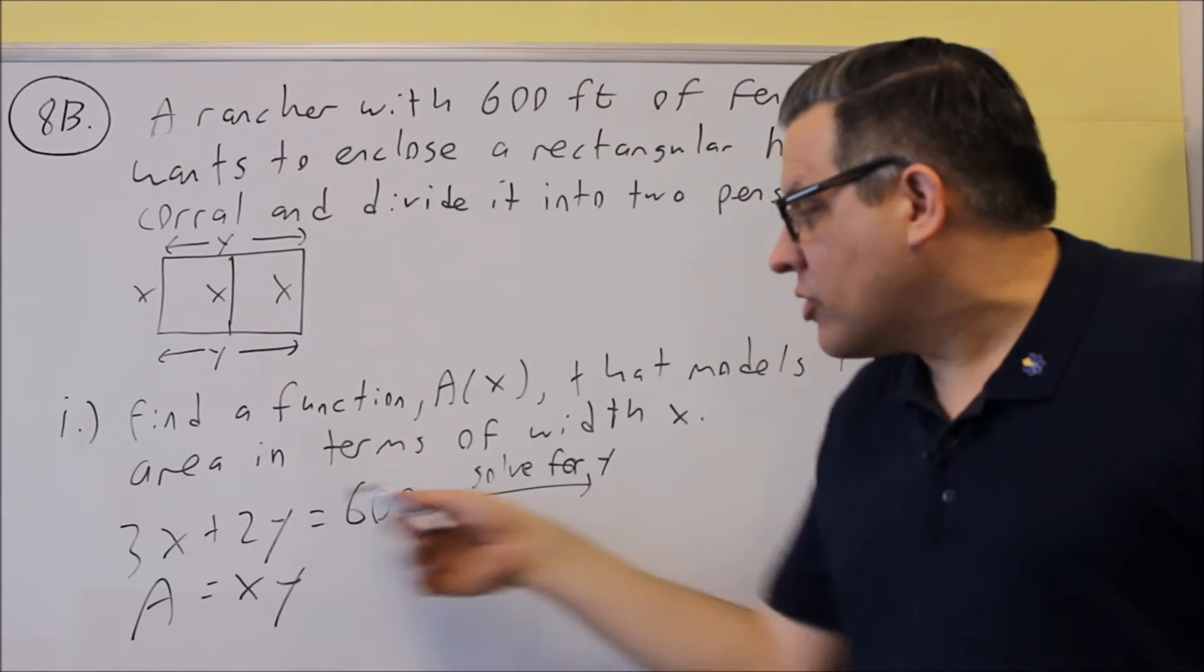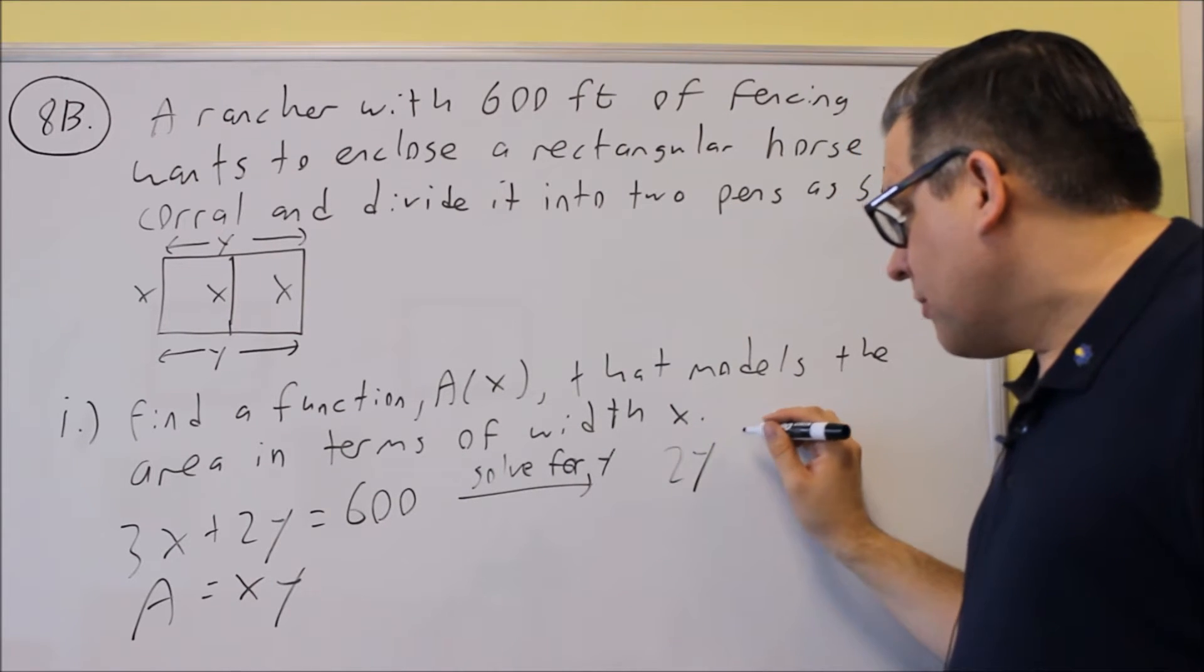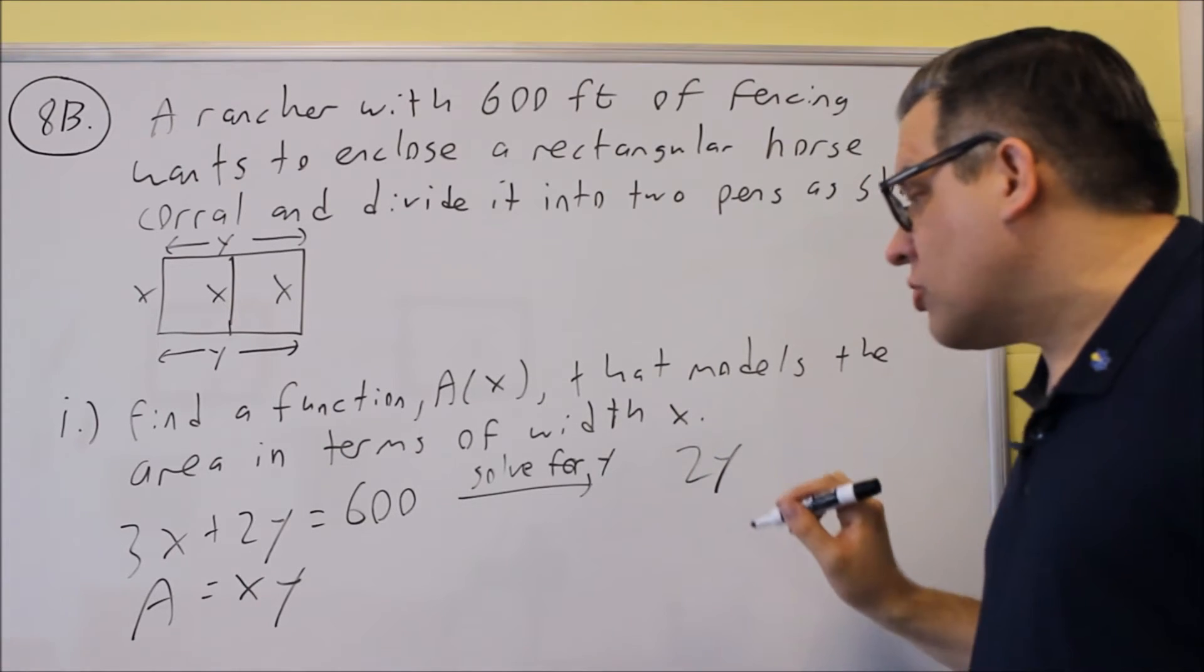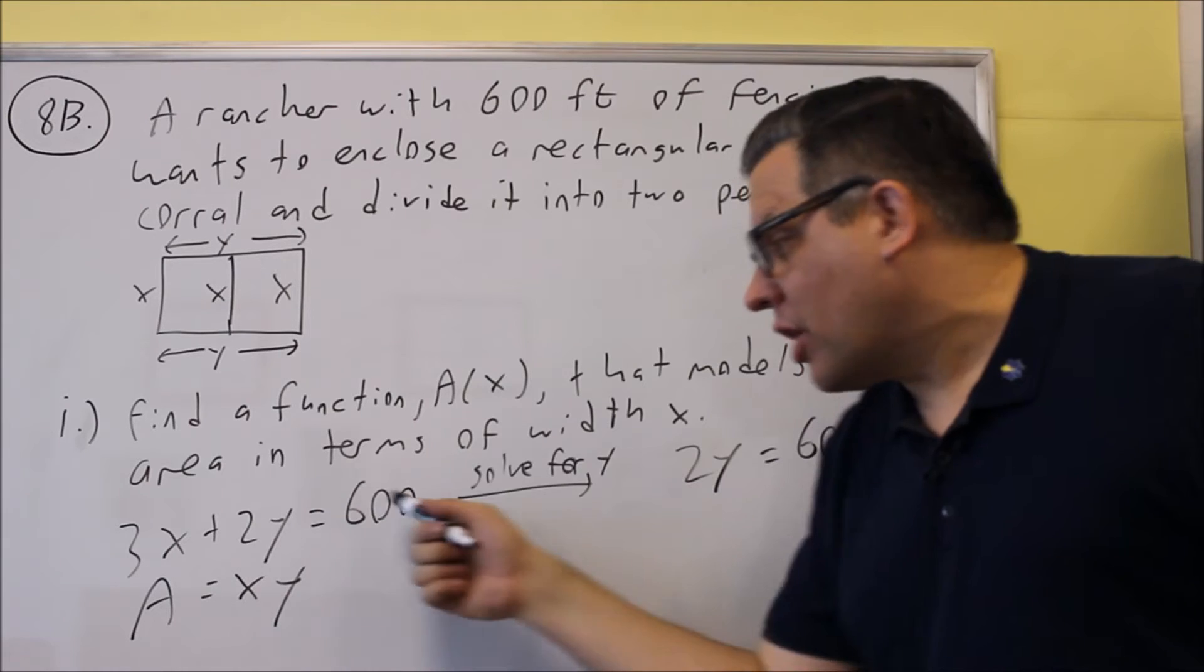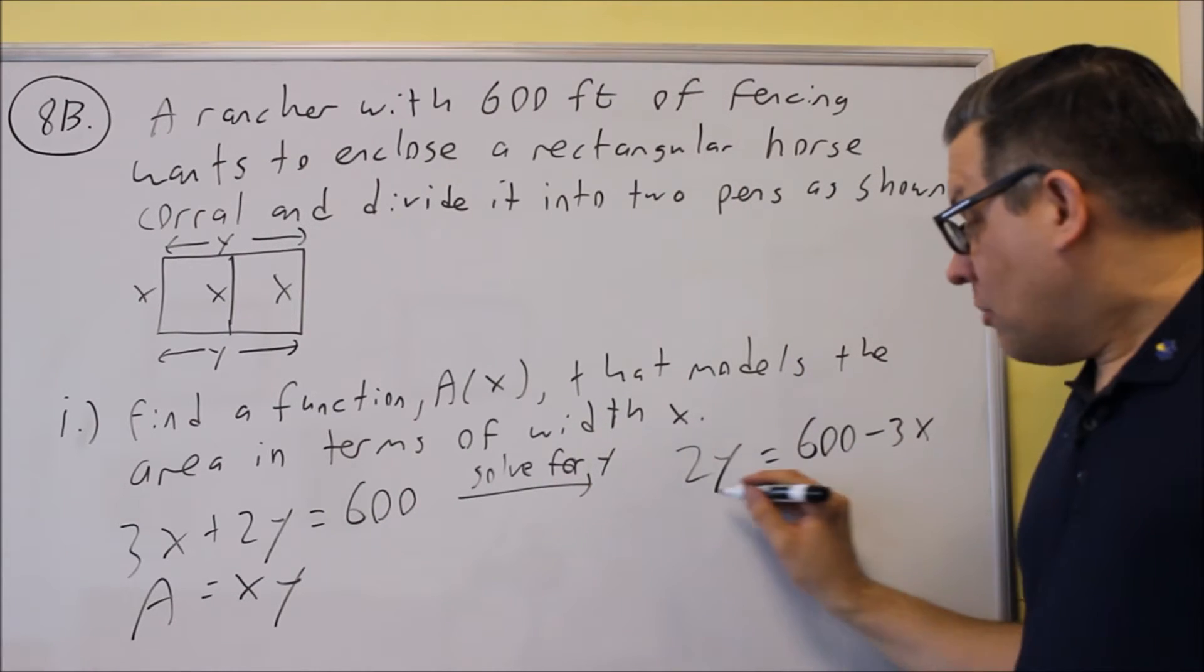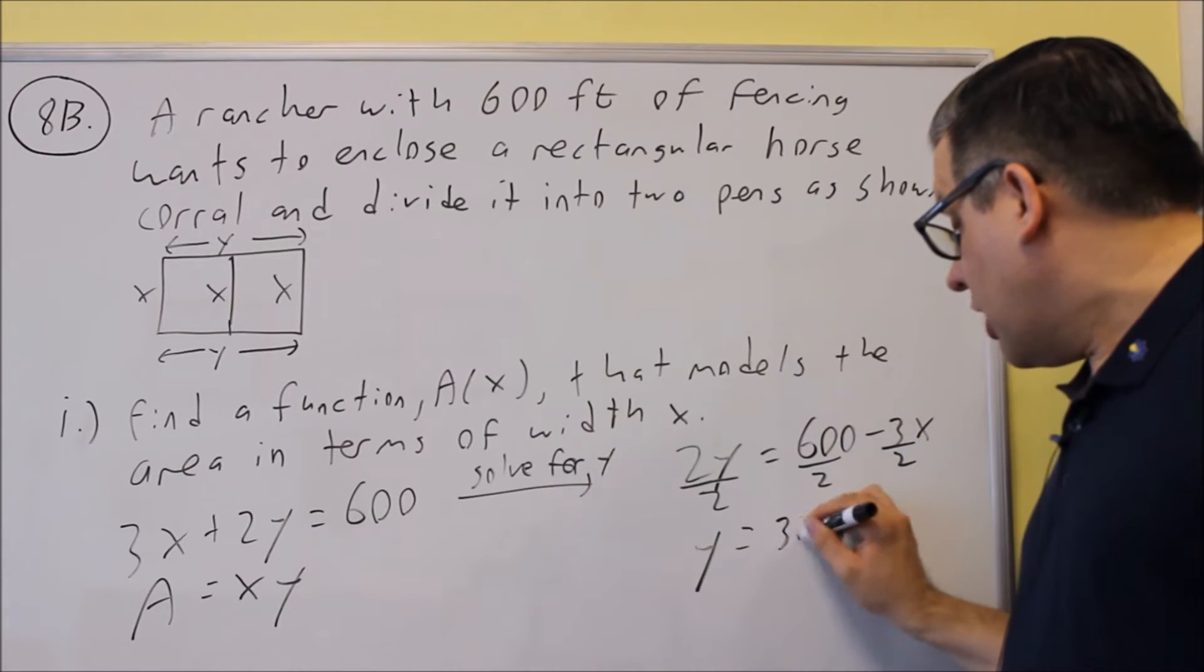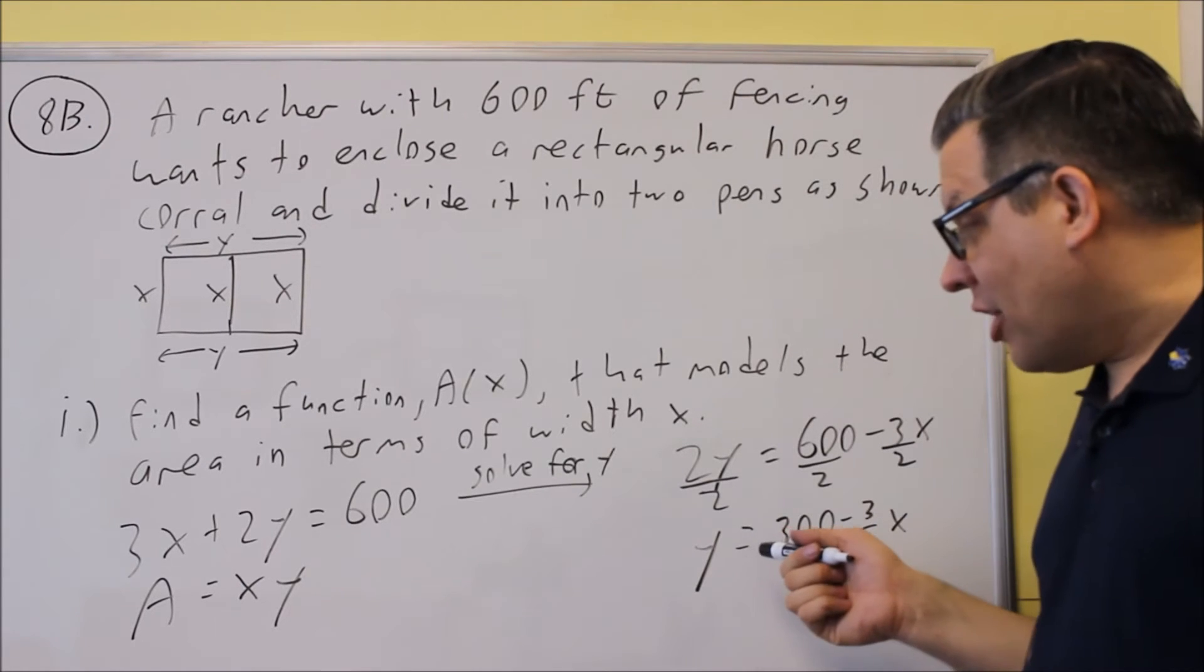So if I solve for y, that means I would subtract 3x from both sides and I would get 2y is going to equal 600 minus 3x. I subtract the 3x from both sides, leave the 2y on that side there. But I also want to divide both of these by 2 and get 300 minus 3 halves x. That's my y value.